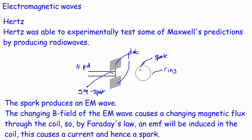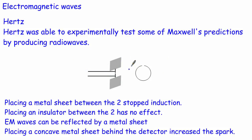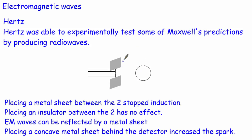When he saw a spark in the detector he knew electromagnetic waves were being generated. He then placed metal sheets in the path and found that stopped the sparks altogether — so metal either absorbed or reflected the waves. When he replaced the metal with an insulator, the sparks continued, showing electromagnetic waves can travel through insulating materials. He then confirmed the waves could be reflected by directing them off a metal plate and observing sparks at a new detector position.